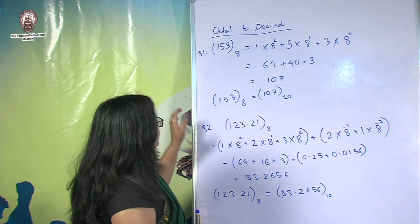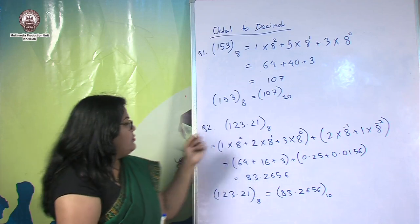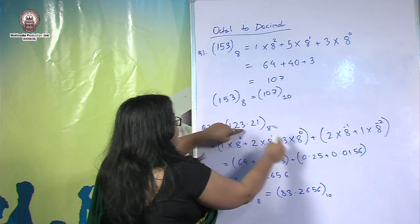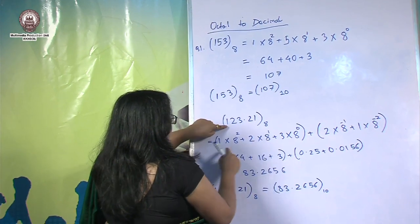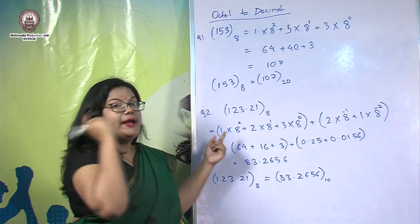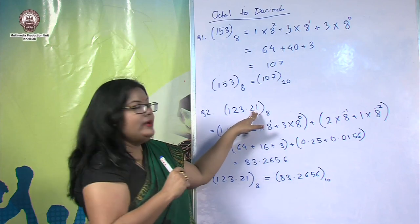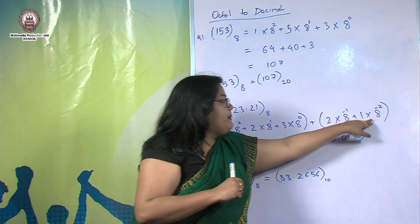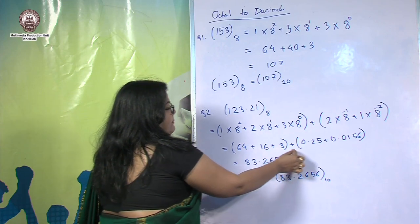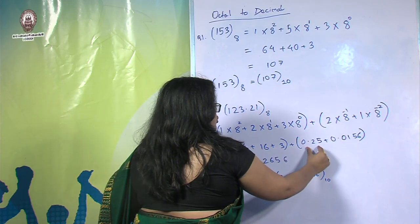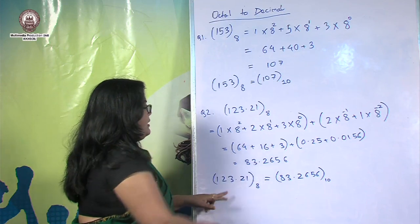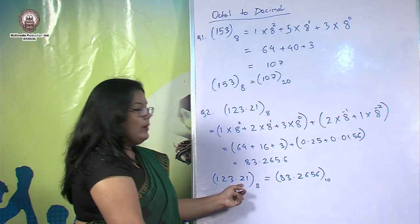Now let us look at an octal number with a fractional part: 123.21. The integer part: 3×8⁰ + 2×8¹ + 1×8² = 3 + 16 + 64. For the fractional part, 2 is multiplied by 8 to the power minus 1, and 1 by 8 to the power minus 2, giving 0.25 + 0.015625. Summing everything, the decimal equivalent of 123.21 in octal is 83.265625.